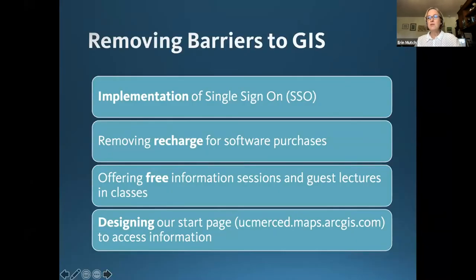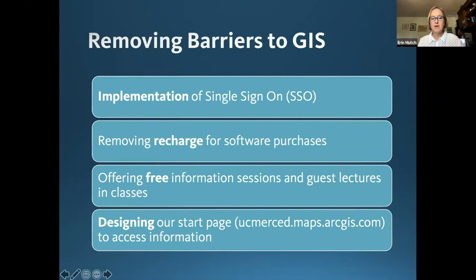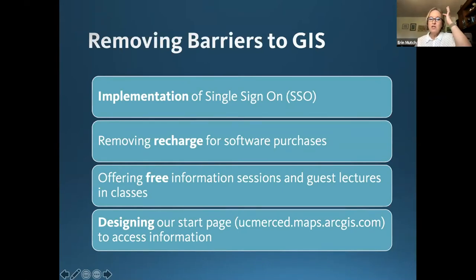The biggest issue when I came on campus was removing barriers to GIS. One approach was to implement single sign-on — a best practice that helped remove our barriers. We also removed our recharge for software purchases. When I came to campus, I became a bill collector, which I didn't want. We also offered free information sessions, guest lectures, and classes, and designed a start page on our UC Merced ArcGIS Online entry point.